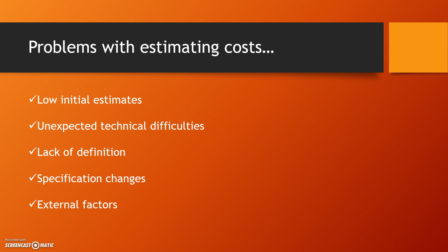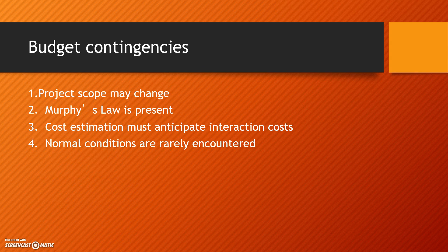External factors could be anything from the market changing to new governmental regulations. Budget contingencies: your scope may change, but if you're effectively managing your scope with a change management process, that should yield additional revenue to cover the change. Murphy's Law — if something can go wrong, it will go wrong. Also, not enough of the right parties were involved in the cost estimation, and normal conditions rarely ever exist. That's what I have for the week — I thought it was all valuable information. Reach me during office hours, or email or instant message me. Have a good week.